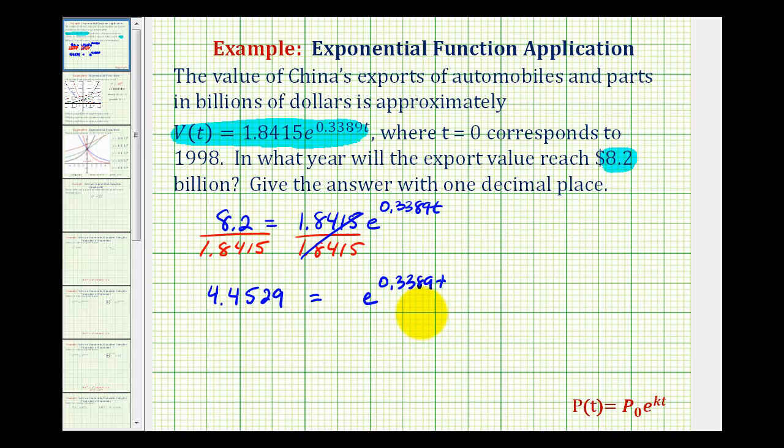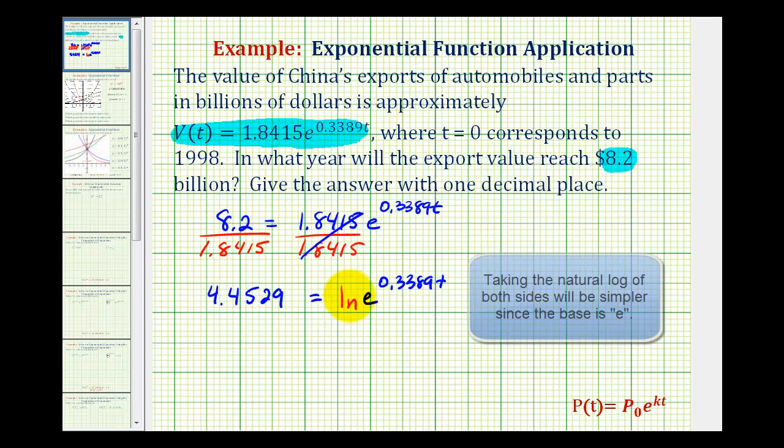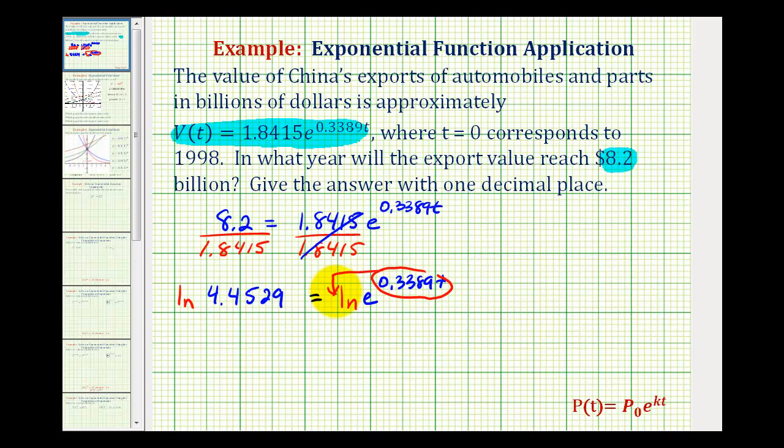Now we want to solve for t, but in order to do this, we have to move it out of the exponent position. So if we take the common log or natural log of both sides, let's go ahead and take the natural log. Then we can apply the power property of logarithms and move this exponent here to the front, so it's the coefficient of natural log e.